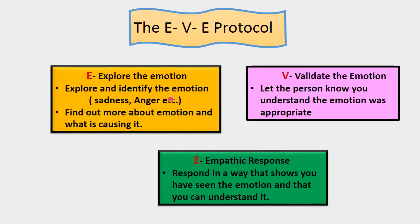E — Explore the emotion: explore and identify the emotion. Ask the person you are talking to, 'Can you tell me more about that?' In this way you explore the emotion. V — Validate the emotion: let the person know you understand the emotions were appropriate. Say something like, 'I can understand how that would have occurred,' or 'Most people would feel like that.' E — Empathetic response: respond in a way that shows you have seen the emotion and can understand it, like 'I am really sorry about it' or 'I hear what you are saying.'